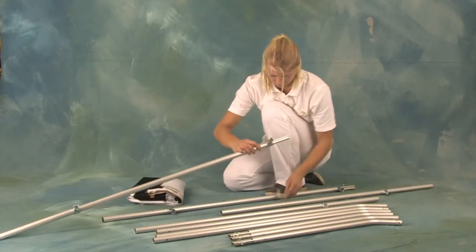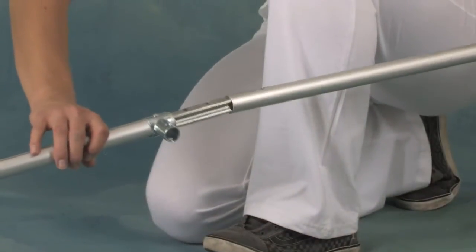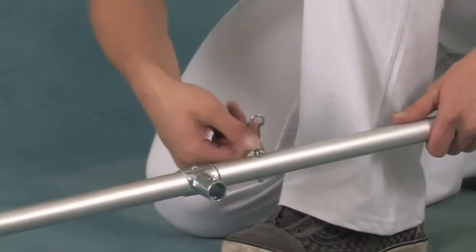Assembly starts by putting the two sections of the frame pole together. Fit the clip into the hole and snap the clip closed.